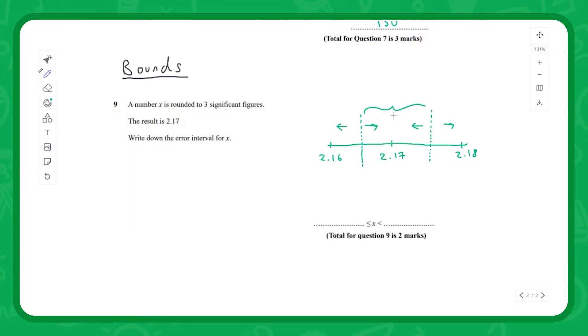Now we've just got to find out what are those maximum and minimum values. Well, the minimum it could be is between 0.16 and 0.17, so that's going to be 2.165. And the maximum, or that limiting line there, is going to be between 0.17 and 0.18, that's going to be 2.175. So they are going to be our minimum and our maximum limits.